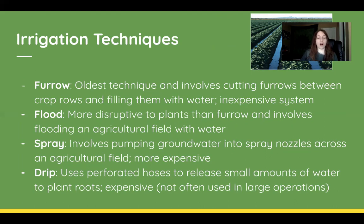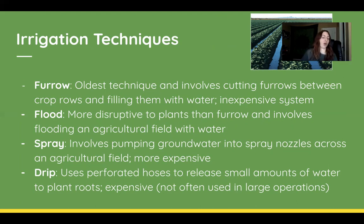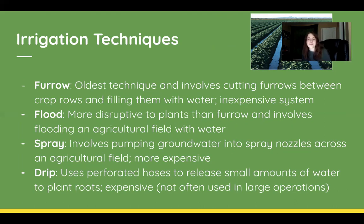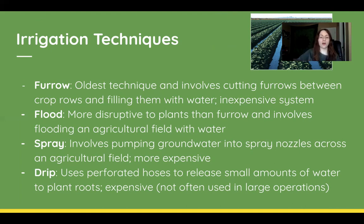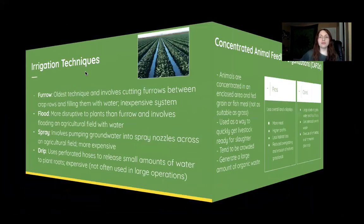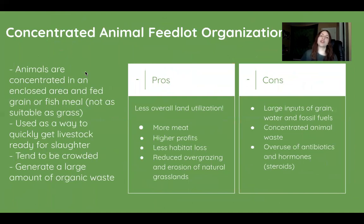Finally, drip irrigation uses perforated hoses to release small amounts of water directly to plant roots. It's the most effective of the four methods at about 95%, with only 5% lost to evaporation and runoff. It's the most expensive and typically not used in large-scale operations due to its slow output.